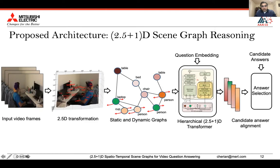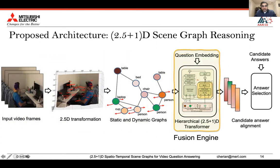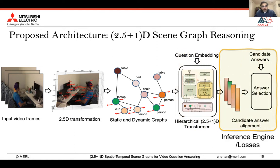Leveraging this insight, we propose a video question answering pipeline called 2.5+1D scene graph reasoning. Our setup consists of modules for transforming a 2+1D video scene graph with 2D spatial and 1D temporal information to a 2.5+1D scene graph, where the 2.5D characterizes pseudo 3D depth of the scene alongside 2D spatial locations. This 2.5+1D scene graph is used within a specialized hierarchical spatial temporal transformer that produces features at multiple levels of semantic abstraction, combined with question embeddings and aligned with candidate answers.